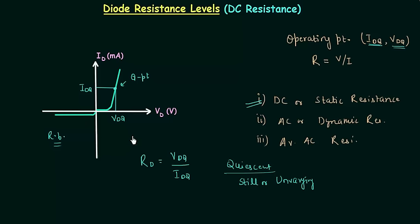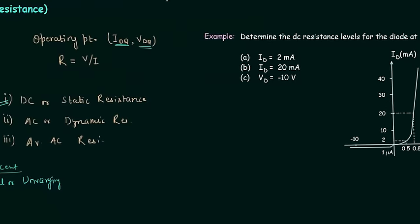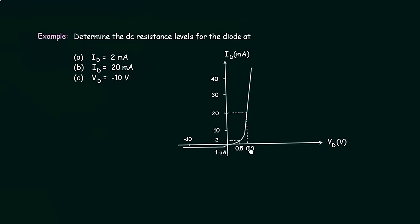Now we will move to the numerical problem. We have to determine the DC resistance levels for the diode at Id equals 2mA, Id equals 20mA, and Vd equals minus 10V. I will first solve case B, where we have to calculate DC resistance when Id is equal to 20mA.